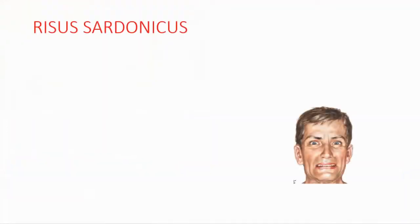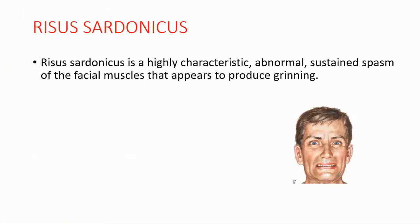Risus Sardonicus is a highly characteristic abnormal sustained spasm of the facial muscles that appears to produce grinning. You can see this grinning from the image.